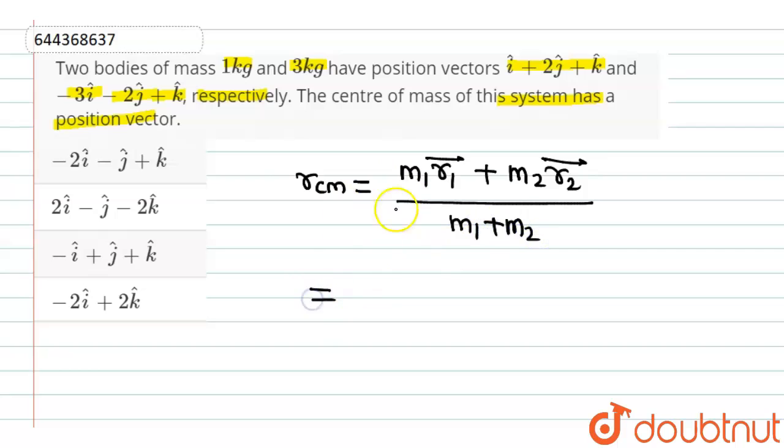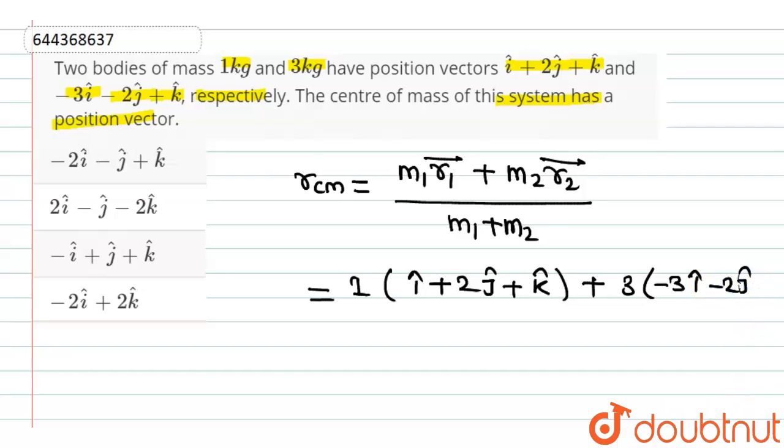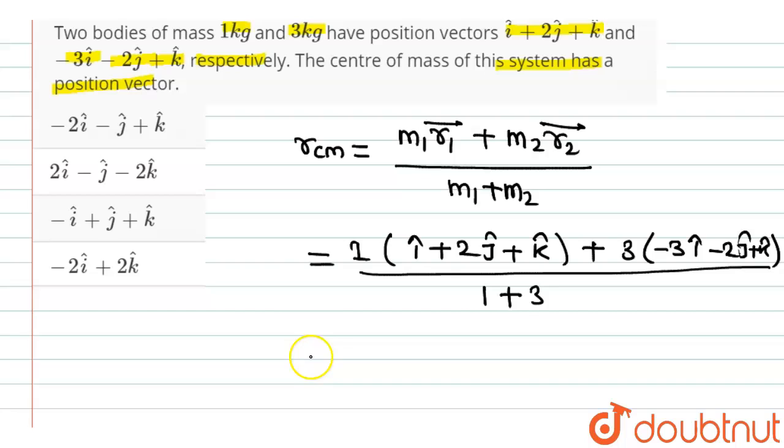Now putting respective values, the value of m1 is 1, in bracket the value of r1 bar is i cap plus 2 j cap plus k cap, plus the value of m2, the value of m2 is 3, in bracket r2 bar is minus 3 i cap minus 2 j cap plus k cap, divided by the value of m1 is 1 plus the value of m2 is 3 kg, 1 plus 3.